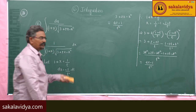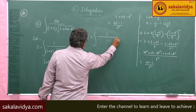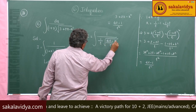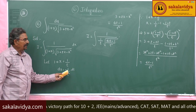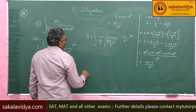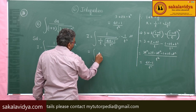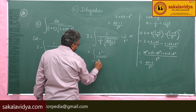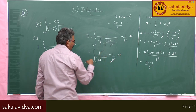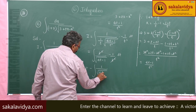Coming back to the integral, I becomes the integral of (1 by t) divided by the square root of (4t minus 1) by t squared, times minus 1 by t squared dt. The square root of t squared is t, so t squared cancels, and this simplifies to minus the integral of 1 by the square root of (4t minus 1) dt.